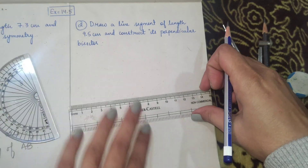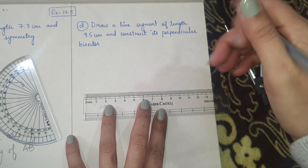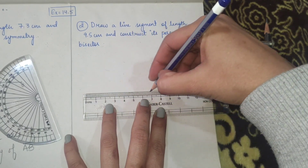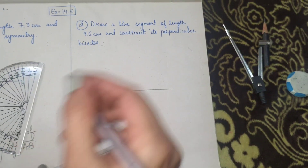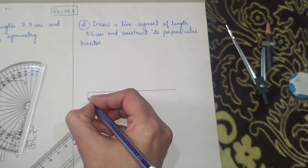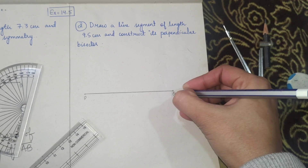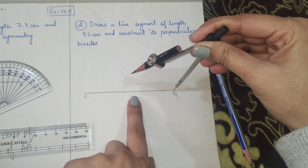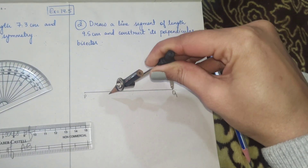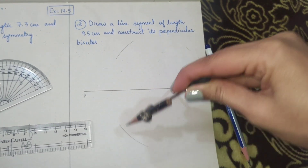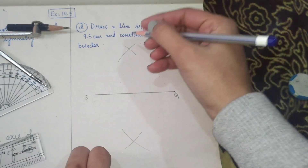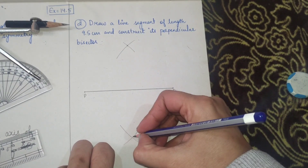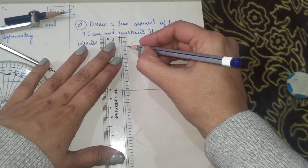I'll draw a line segment of length 9.5 centimeters exactly. Since the name is not mentioned I'll name it P and Q. It's 9.5 centimeters. Repeating the procedure - opening up the compass through a length more than half of PQ, drawing an arc one above and one below the line segment, and repeating by keeping the pointer on the other point.